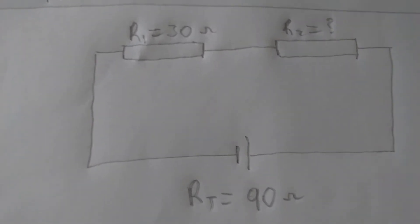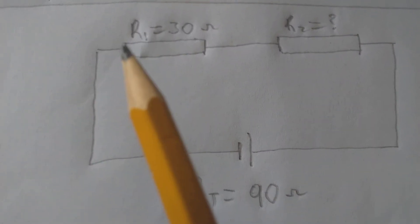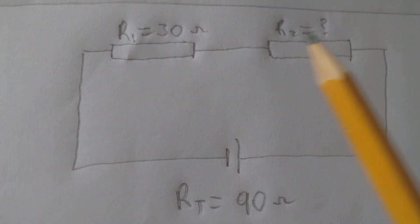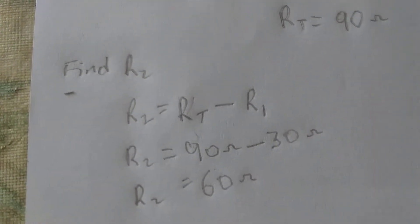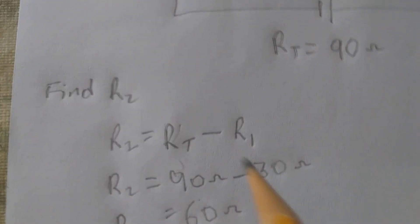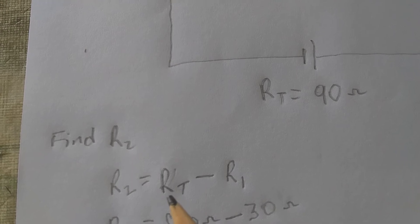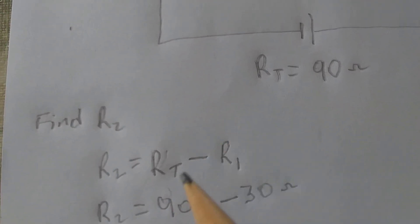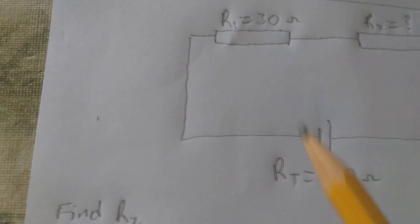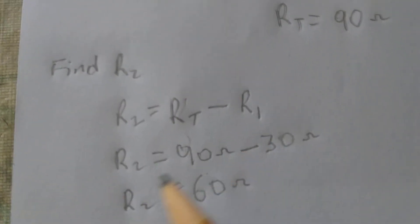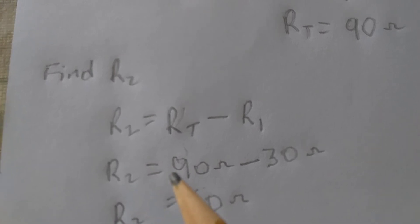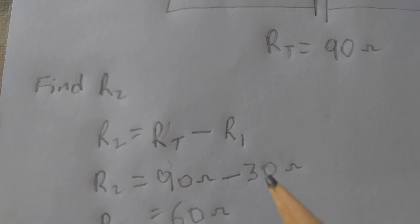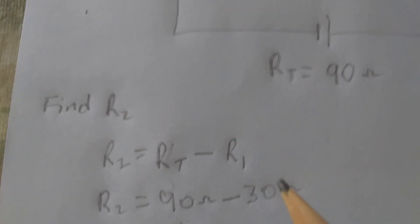So the formula is that we take away R1 from the total to give us R2. So here I had gone ahead and done that. We have R2 is equal to RT minus R1. So we take away R1 from RT.